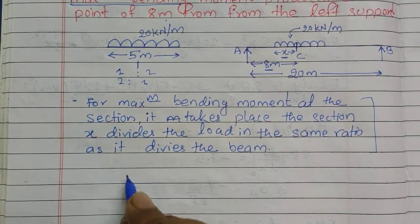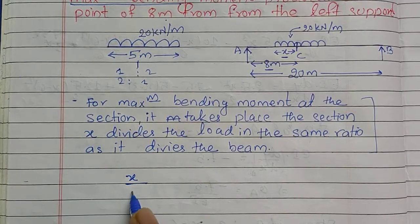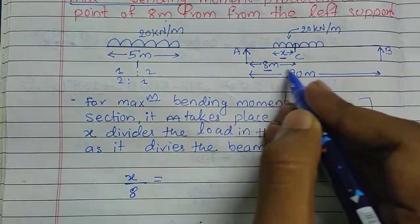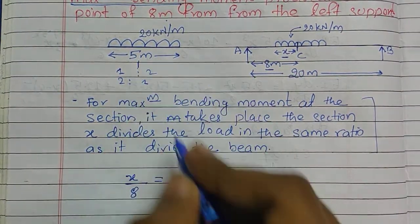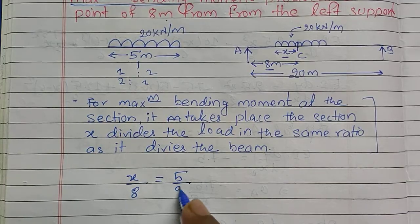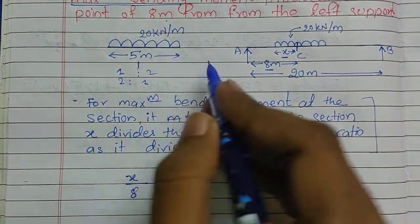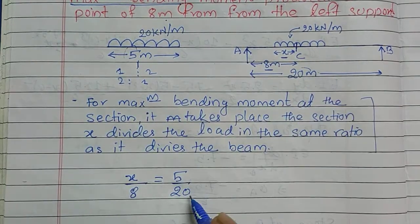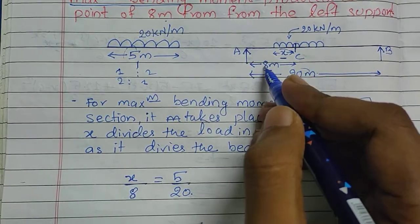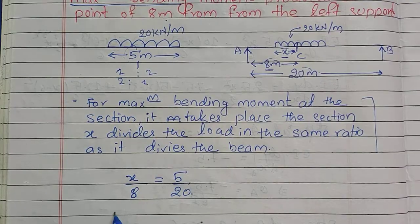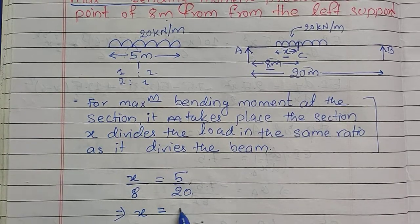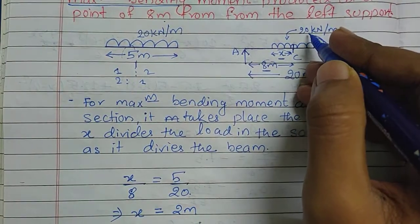Using the proportionality condition: X divided by 8 equals 5 divided by 20, where 5 meters is the load length and 20 meters is the beam span. Solving this equation, the value of X is equal to 2 meters.